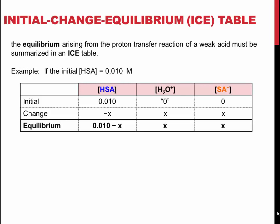Initially, there are no hydronium ions, or salicylic's conjugate base, in the reaction flask. Therefore, their initial concentrations are zero.